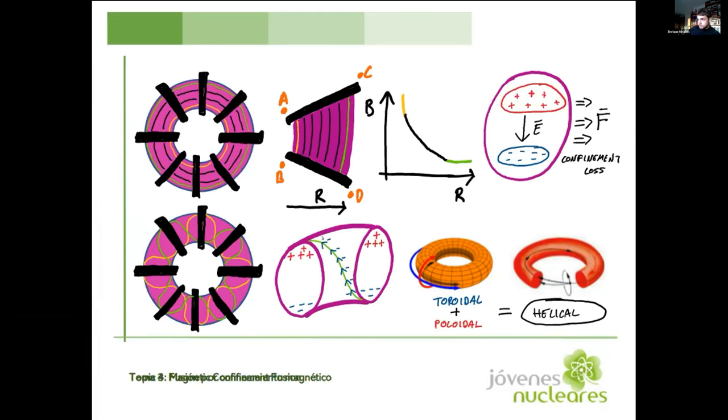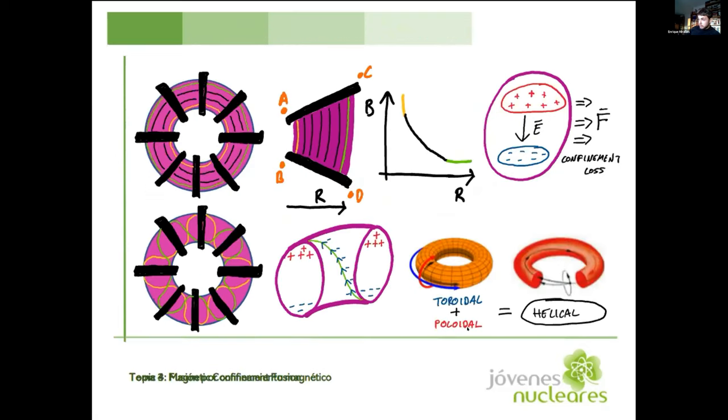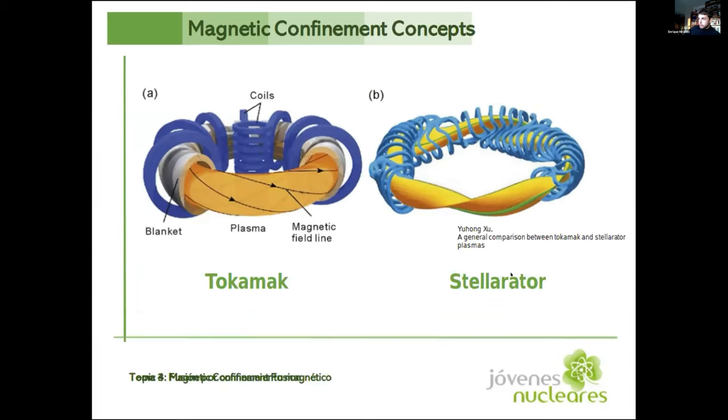In the case of the tokamak, we have a central solenoid in the middle. This central solenoid is going to drive a current through the plasma, and this current in the plasma is going to generate a poloidal magnetic field. It's going to generate a magnetic field that wraps the torus. And the stellarator generates this helical magnetic field naturally, because they shape the magnets in a non-axisymmetric way to naturally generate a magnetic field that is helical itself.